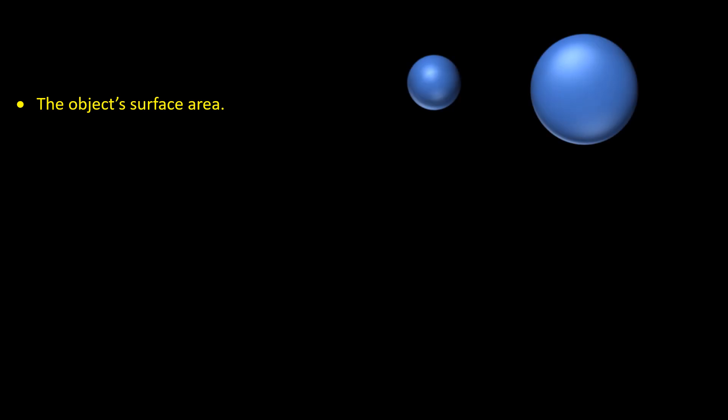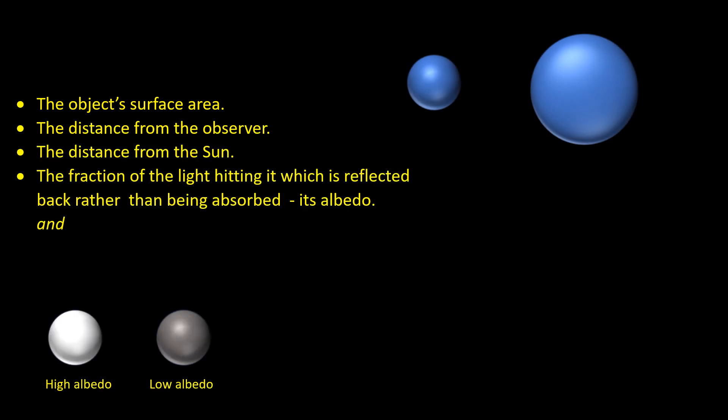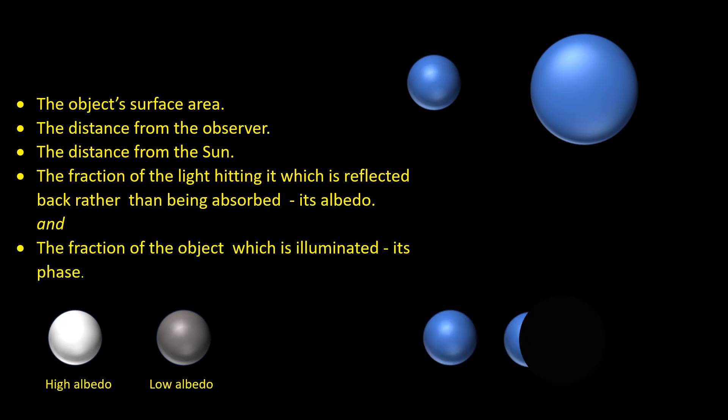The object's surface area, the distance from the observer, the distance from the sun, the fraction of the light hitting it which is reflected back rather than being absorbed, its albedo, the fraction of the object which is illuminated, its phase.